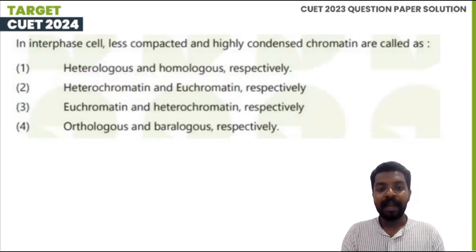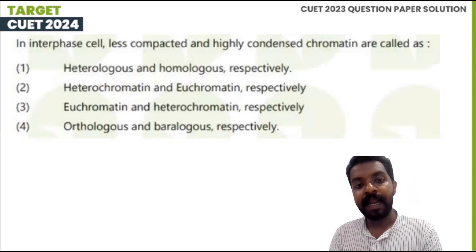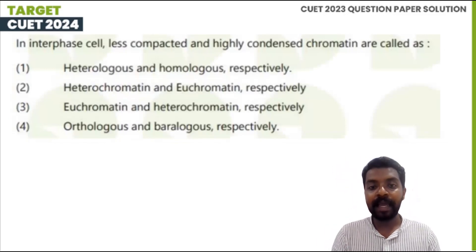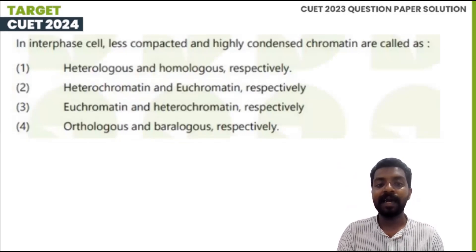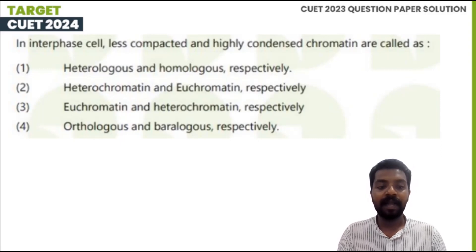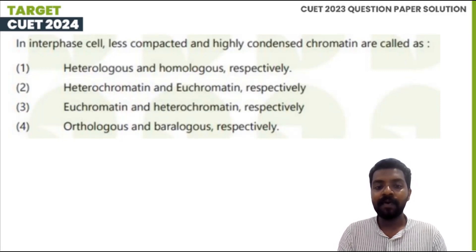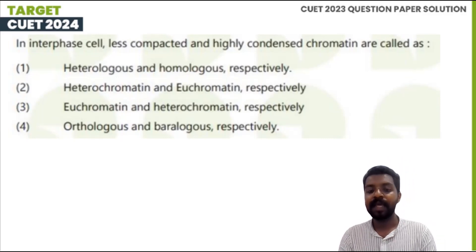In an interphase cell, less compacted and highly condensed chromatin are called? Less compacted chromatin is euchromatin and highly condensed chromatin is heterochromatin. We use euchromatin and heterochromatin respectively. The third option is correct.